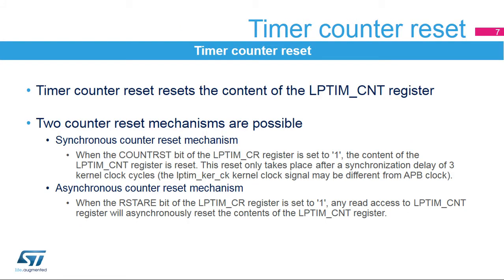The low-power timer features a counter-reset function used to reset to zero the contents of the LP-TIM-CNT register. Two counter-reset mechanisms are possible: the synchronous counter-reset mechanism and the asynchronous counter-reset mechanism. A synchronous counter-reset is performed by setting the COUNT-RST bit, and due to its synchronous nature, it only takes place after a synchronization delay of three LP-TIM kernel clock cycles. When the RST-ARE bit is set, an asynchronous counter-reset is performed on the next APB read access to the LP-TIM-CNT register.